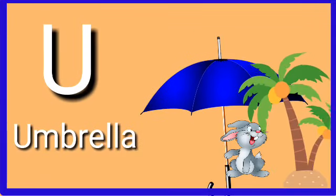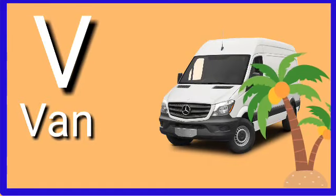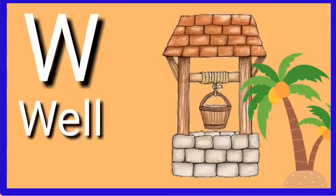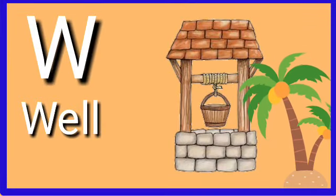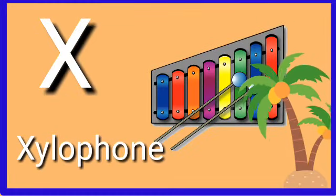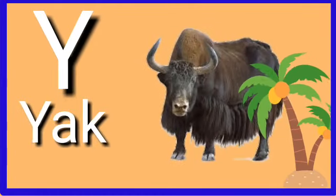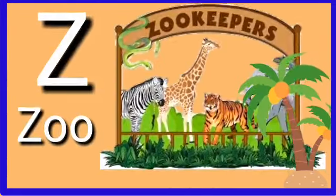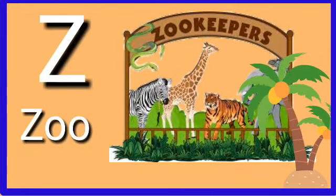U for umbrella, V for wand, W for wand, X for yellow phone, Y for yax, Z for do.